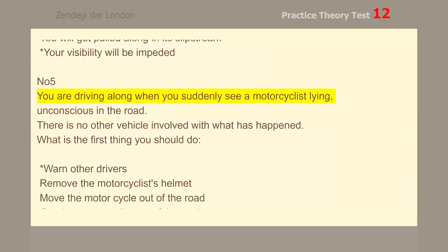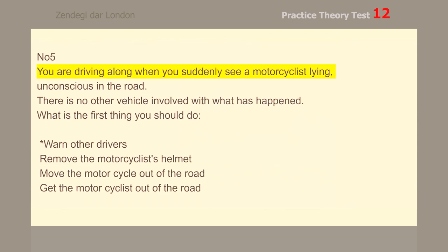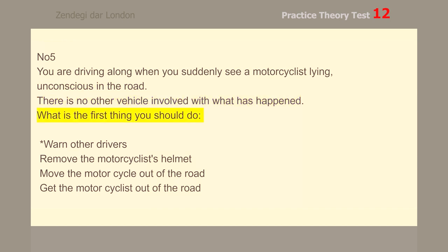Number 5. You are driving along when you suddenly see a motorcyclist lying unconscious in the road. There is no other vehicle involved. What is the first thing you should do? Warn other drivers.